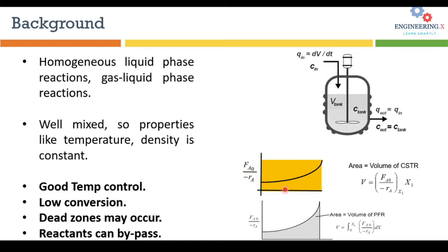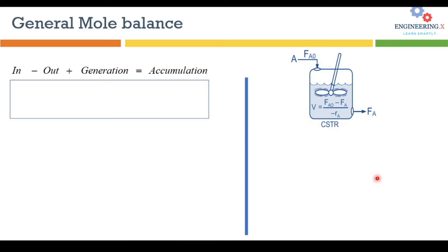As conversion increases, this factor increases exponentially. You will see at the end of this tutorial how the volume of a CSTR reactor varies compared to the volume of a plug flow reactor for the same conditions. At higher conversion rates like 90% or 95%, the area for the CSTR reactor would be more than double — maybe three or four times — because this is an exponential function, not a linear curve. We will compare the volumes of the two reactors for the same problem.